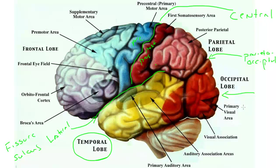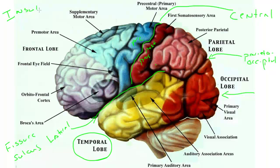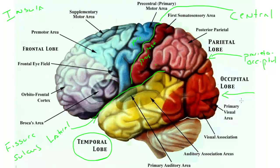Within each of these, if we were to reach in and pull the lateral sulcus open, we would find a fifth lobe called the insula. Insula means island, and it's actually buried inside this lateral fissure. So we'll talk about that later, but bear in mind there's a fifth region. So we have five lobes: frontal, parietal, occipital, temporal, and insular.